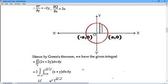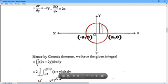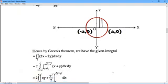So y = √(a² - x²). The x limits are -a to +a and y limits are 0 to √(a² - x²).